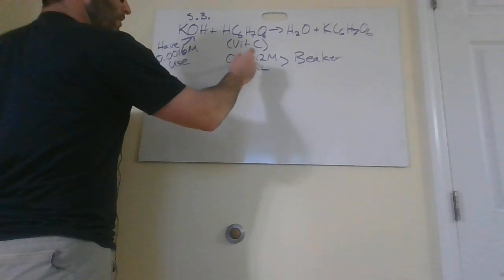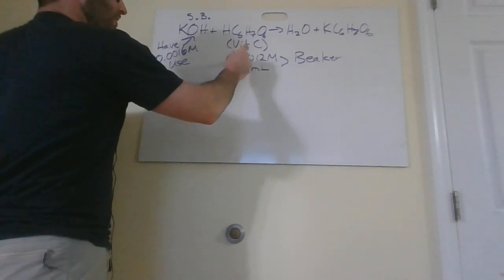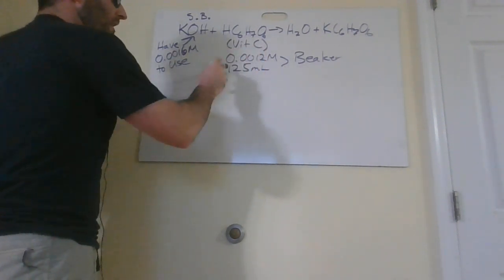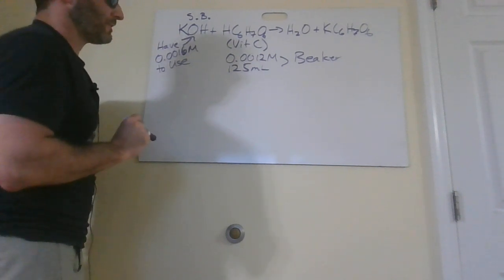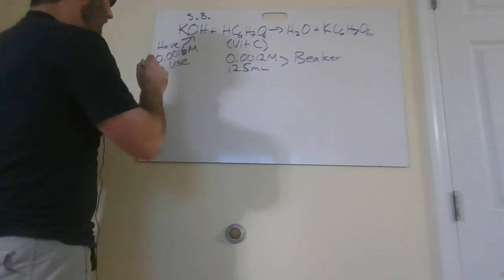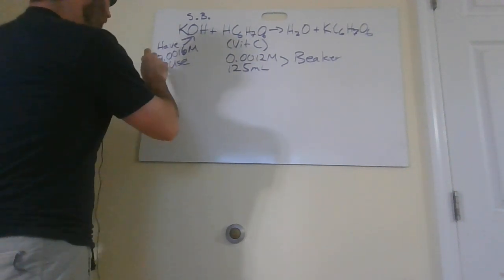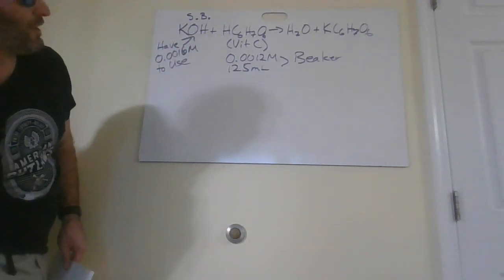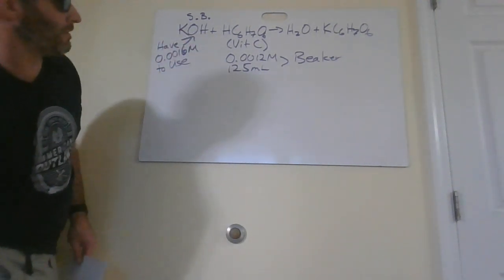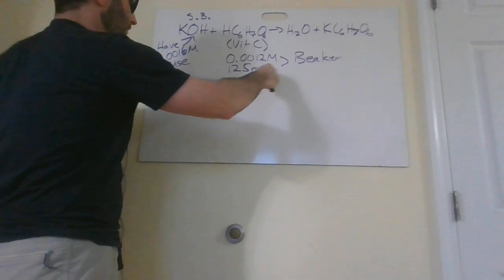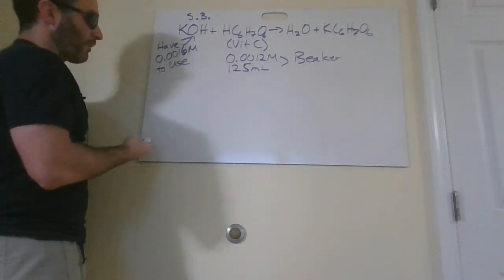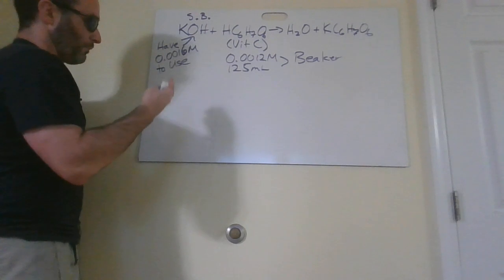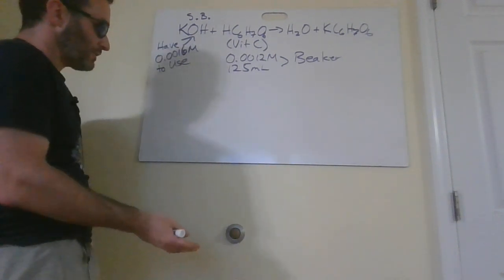In my beaker, I've got 0.0012 molar vitamin C and 125 milliliters of it. I've only got 0.0016 molar KOH to use. I'm going to put an indicator in here, and when I've perfectly neutralized them, I'm going to get a color change.